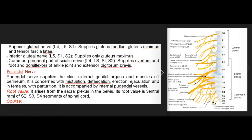(2) Inferior gluteal nerve (L5, S1, S2), supplying only gluteus maximus. (3) Common peroneal part of sciatic nerve (L4, L5, S1, S2), supplying evertors of foot, dorsiflexors of ankle joint, and extensor digitorum brevis.